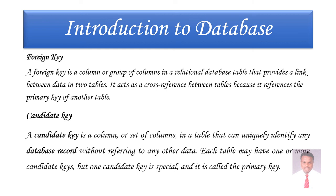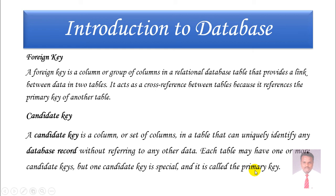The next key is a candidate key. A candidate key is a column or a set of columns in a table that can uniquely identify any database record without referring to any other data. Each table may have one or more candidate keys, but one candidate key is special and is called the primary key. A table may have any number of keys, but it must have a special key called the primary key.